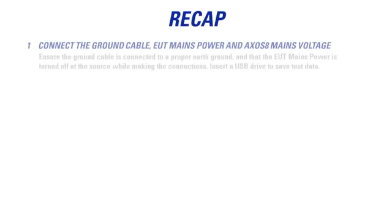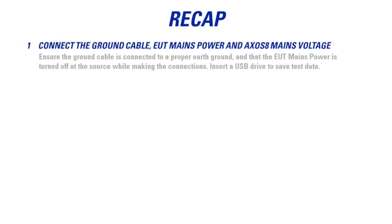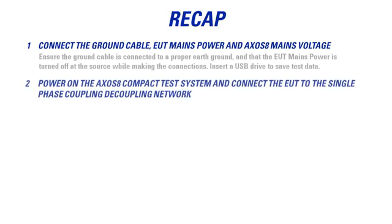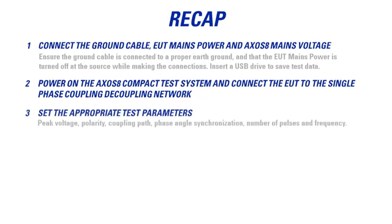To recap, connect the ground cable, EUT mains power, and the Axos 8 mains voltage. Ensure the ground cable is connected to a proper earth ground and that the EUT mains power is turned off at the source while making the connections. Insert a USB drive to save test data.